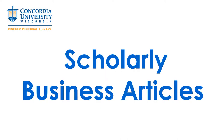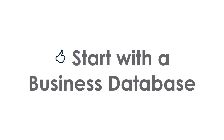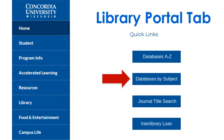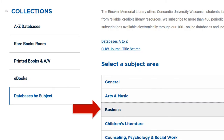This tutorial will cover finding scholarly business articles. Start with a business database. Access Business Databases on the Library Admin Portal under Quick Links, then click on Business from the list of subjects.